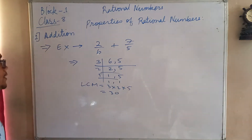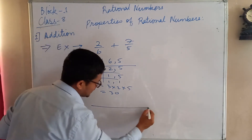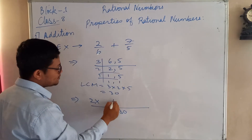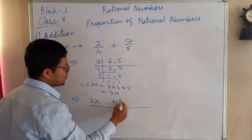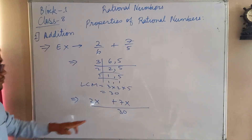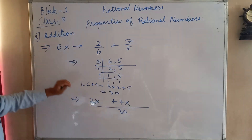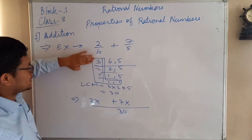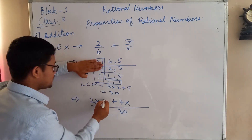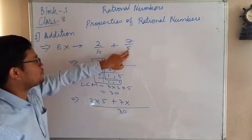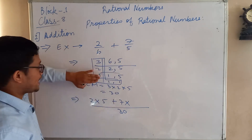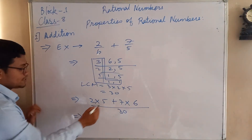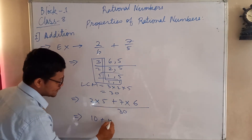Once you have the LCM, make a long line and write 30 below. Write 2, put a multiply sign, and since the middle has a plus sign, write plus, then write 7 and put a multiplication sign. Now find how many times 6 goes into 30 — hide 6, and 5 is left, so write 5. For 5, hide 5 and 3 × 2 = 6 is left, so write 6. So we get 5 × 2 = 10 plus 7 × 6 = 42.